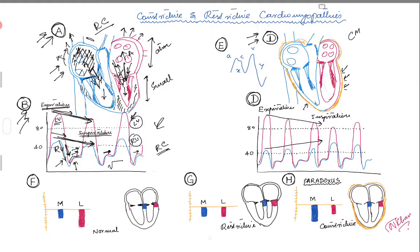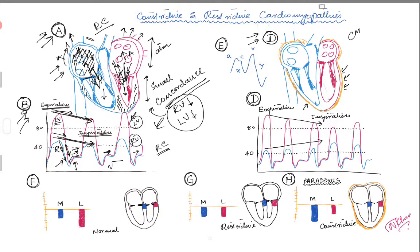In physiological terms, we call this concordance. Both the right ventricle filling and the left ventricle filling go down together — this concordant waveform is the hallmark of restrictive cardiomyopathy. With that, we move to picture C here.